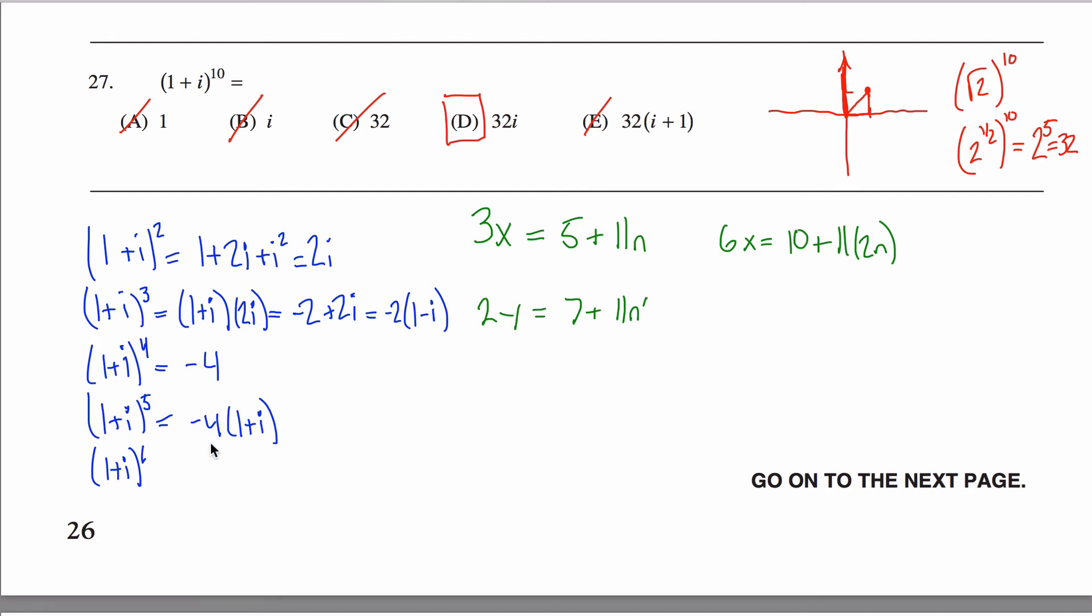But 1 plus i to the fifth is a lot like 1 plus i, it's just got this extra negative 4 right here. So my answer is going to be a lot like this guy right here, except it's going to be multiplied by negative 4. I'm going to get negative 8i. And maybe you can kind of see the pattern if you look at these a little bit more neatly, 2, negative 2, negative 4, negative 4, negative 8.